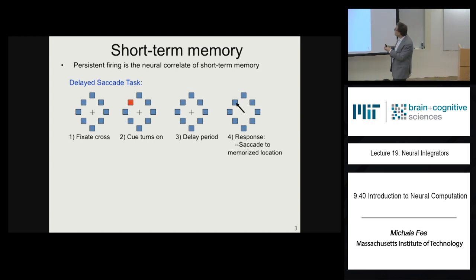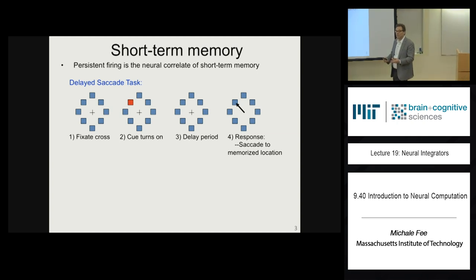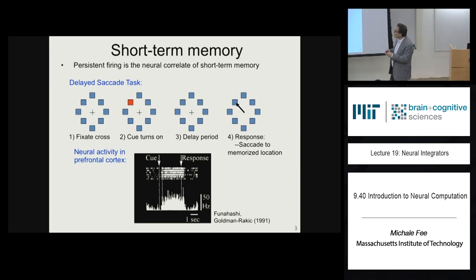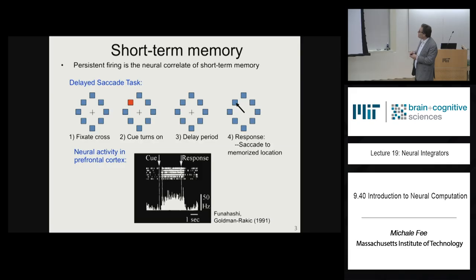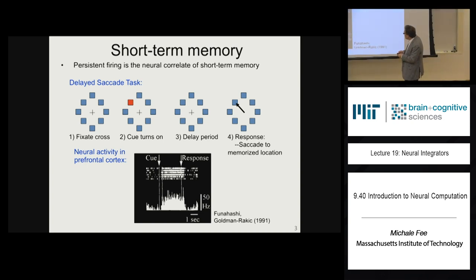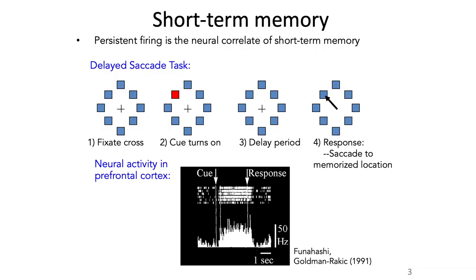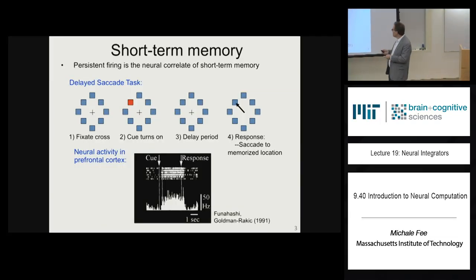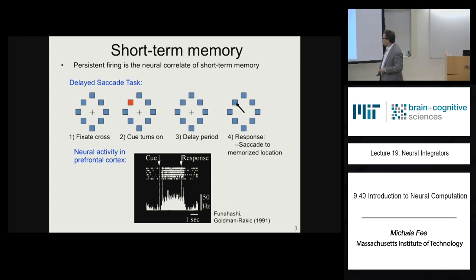In the interval between when the cue turns off and when the animal has to look at the cued location, the animal must remember the direction in which that cue was activated. If you record from neurons in parts of the prefrontal cortex during this task, what you find is that neural activity is fairly quiet during the pre-cue and cue period, then ramps up very quickly and maintains persistent activity during this delay period. As soon as the animal makes a saccade to the remembered location, that neural activity goes away. That persistent activity is thought to be the neural basis of the maintenance of short-term memory.